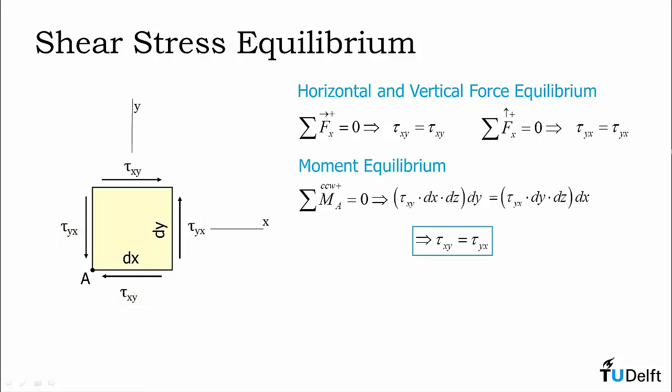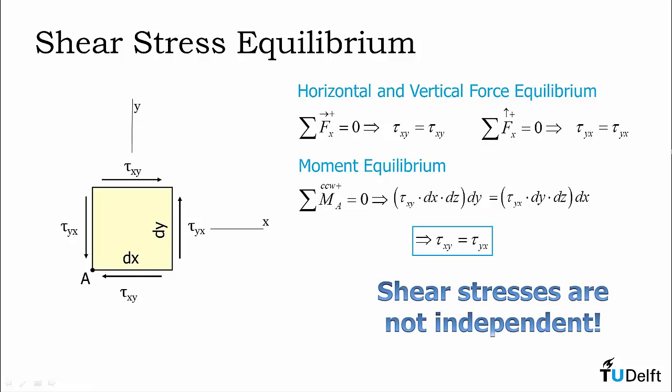Now what we get out of here is that tau xy has to equal tau yx. The area times moment arm cancels out in the moment equilibrium. Thus we see that shear stresses are not independent.